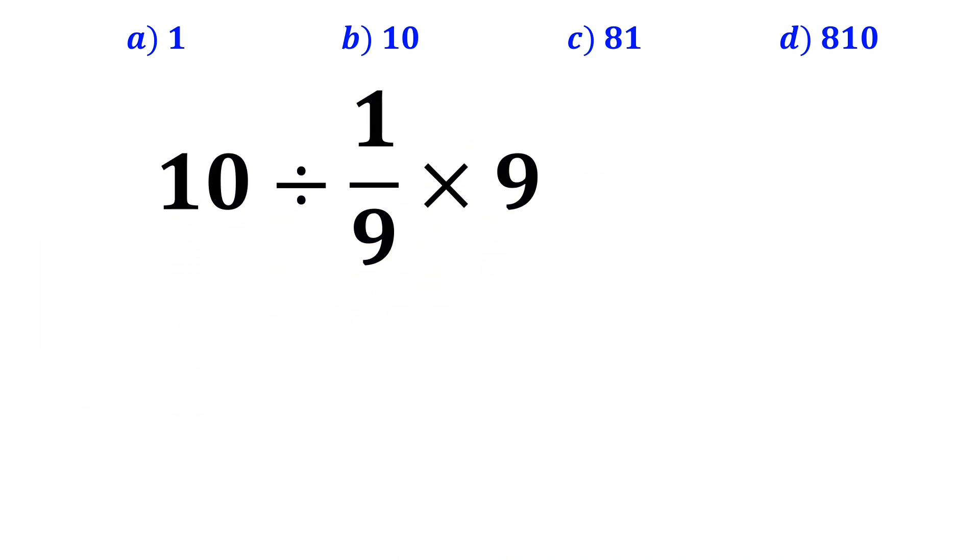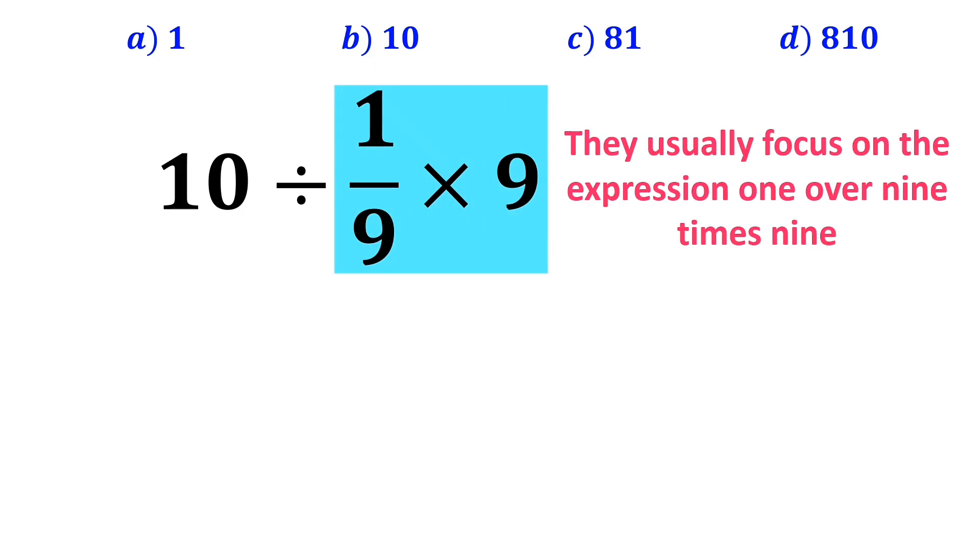In the next step, they usually focus on the expression 1 over 9 times 9, because they believe multiplication has priority over division.